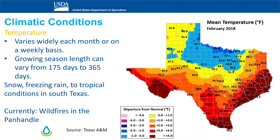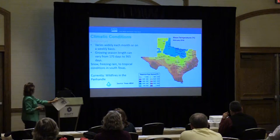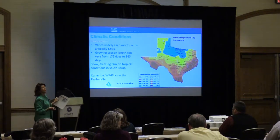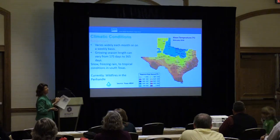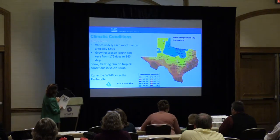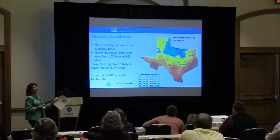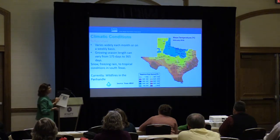For Texas, there's a lot of diversity in temperatures — you can have temperatures in the 30s in northern Texas and the panhandle, all the way down to the 70s at the tip. The growing season ranges from about 170 days to 365 days a year. Conditions can go from snow and freezing rain to tropical conditions. Currently there is a drought in the panhandle of Texas, even though last week they had a bit of rain. We're also dealing with severe drought in Oklahoma, and we're having a special drought monitor meeting in Amarillo. There are currently wildfires in the panhandle as well.